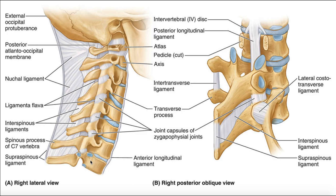Down here is the first thoracic vertebra. You can see right here the facet for the first rib, and here would be the demifacet shared with T2 for the second rib. Now, this structure here — this fibrous tissue — is the joint capsule of the atlanto-occipital joint, the joint between the occipital condyles and C1. Beneath that we have the joint capsule of the atlanto-axial joint. The joint capsules from there move posteriorly and become the joint capsules of what we call the zygapophyseal joints — which are really just facet joints — joints between the superior and inferior articular processes of corresponding vertebrae.